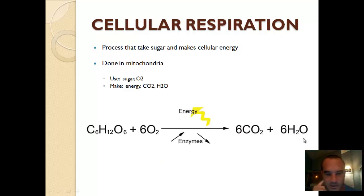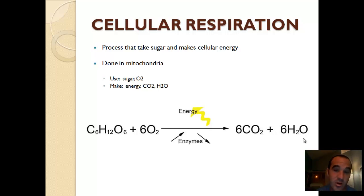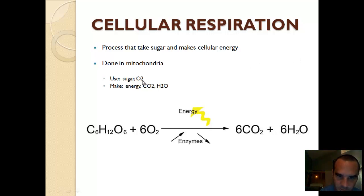Next up, we've got cellular respiration. Cellular respiration happens in the mitochondria — that's the one that looks like a little jelly bean and it's got folded membranes. The process takes sugar and makes cellular energy, so it's what makes you go right now. What makes you be able to think and move around is each one of your cells releasing energy so you can do the processes for life. It uses sugar and oxygen.